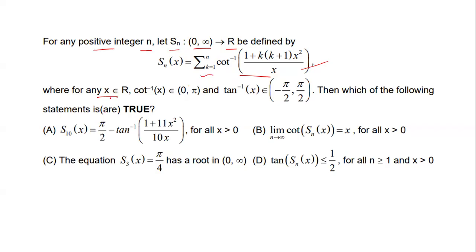For any x belonging to real numbers, cot inverse x lies between 0 to π, and tan inverse x lies between -π/2 to π/2. You have to tell which of the following four options are correct.